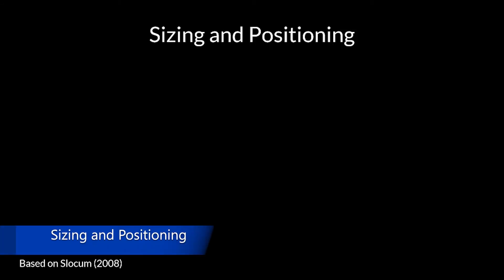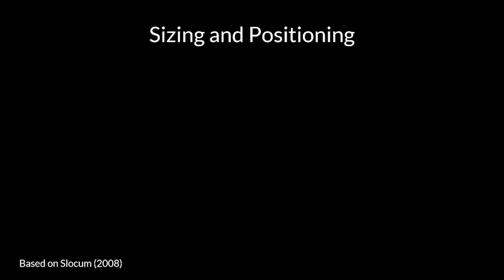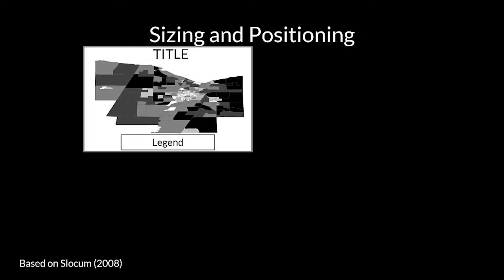Sizing and positioning is the idea that map elements such as the mapped area, title, and legend are at appropriate sizes and are positioned correctly on the final map. For example, this image shows appropriate sizing and positioning of map elements. Note how the mapped area fills the frame appropriately and that the title, mapped area, and legend are centered with one another in terms of positioning.